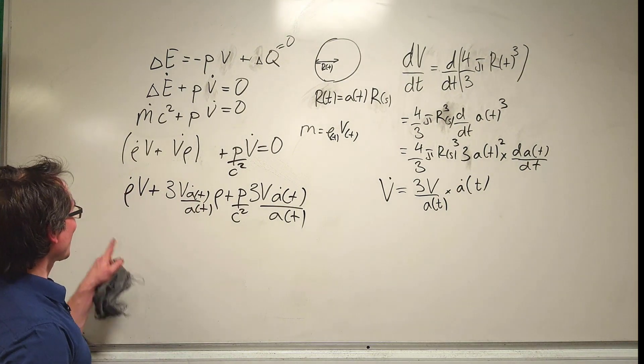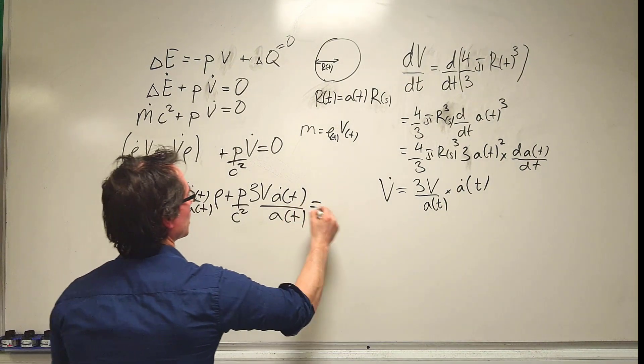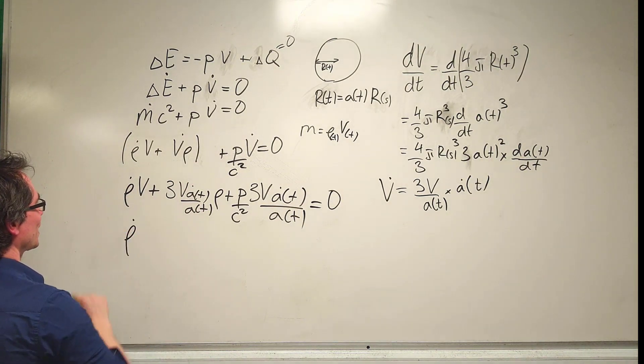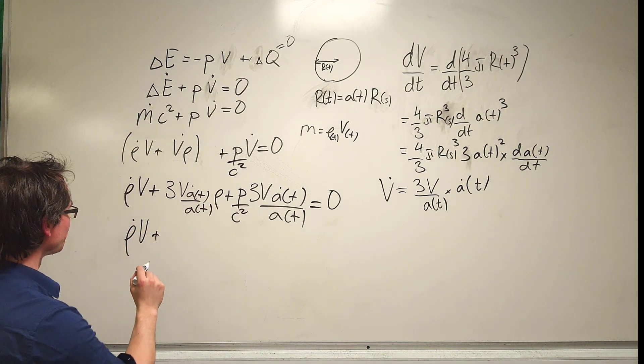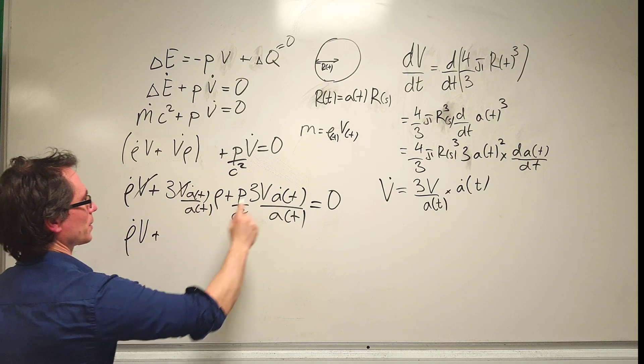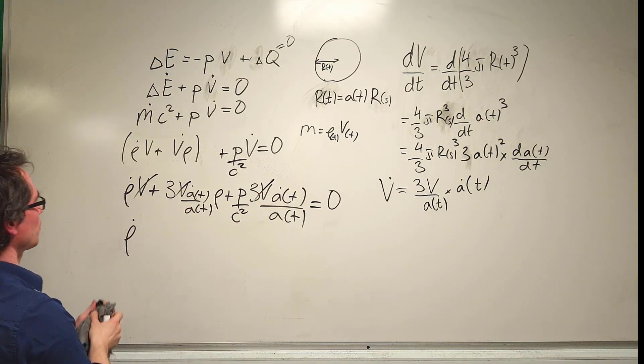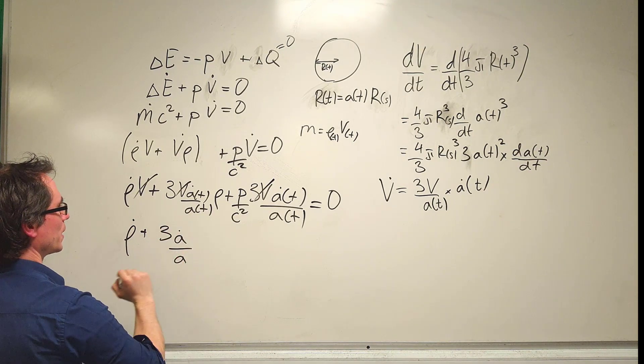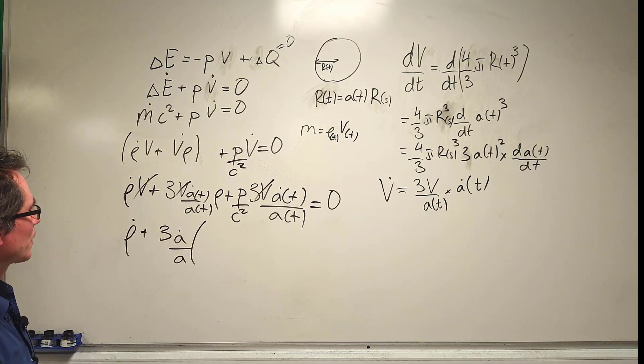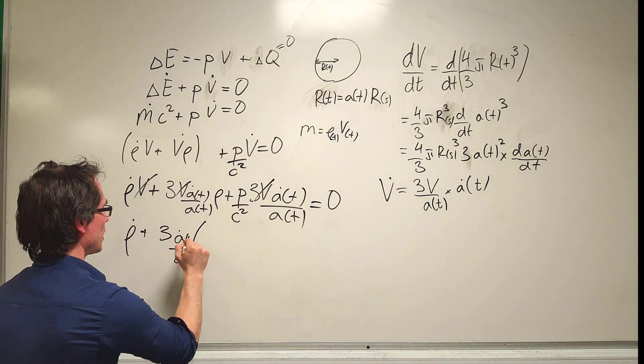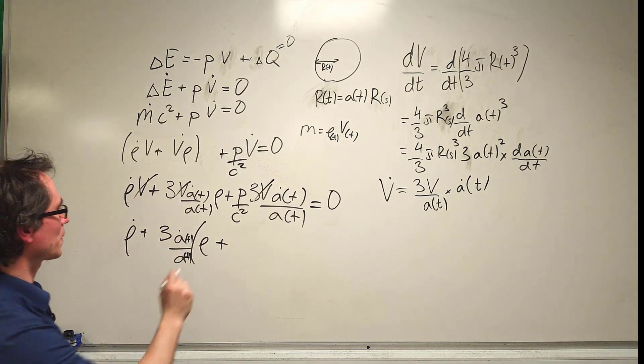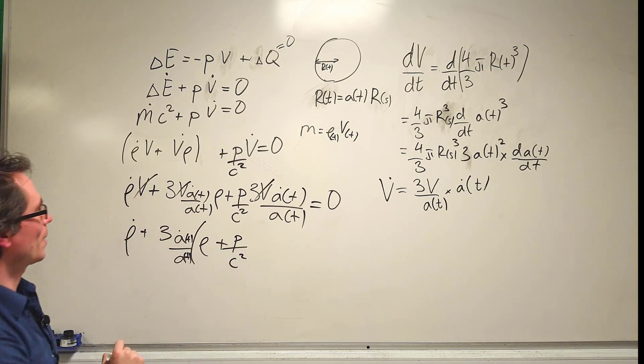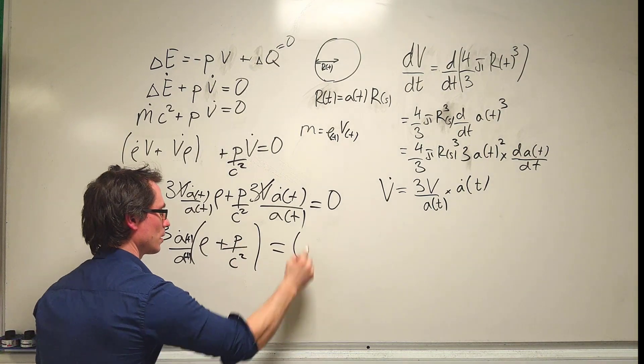Now we just need a little bit of rearranging, and this equals zero. Let's take out a common factor. We can cancel all the V's first. What we have is rho dot plus 3 times a dot over a, and on the inside of the brackets, we have rho plus p over c squared. And that's it.